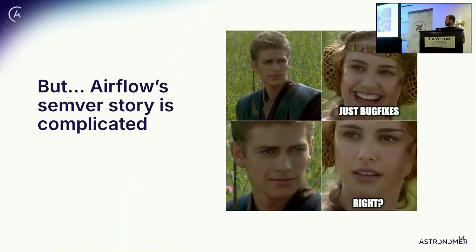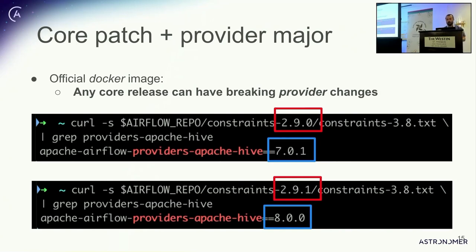The Airflow SemVer story is a little more complicated. When you think about how Airflow is distributed — many people use the official Airflow Docker image — we package and version Airflow core separately from all of the providers. When we cut an official Docker image, we're packaging with it all of the providers at whatever their latest state is. So going from 2.9.0 to the patch release 2.9.1, you might get a major release of the Hive provider. If you use Hive, you might have broken all your DAGs. That underscores the importance of doing something like integration test DAGs.